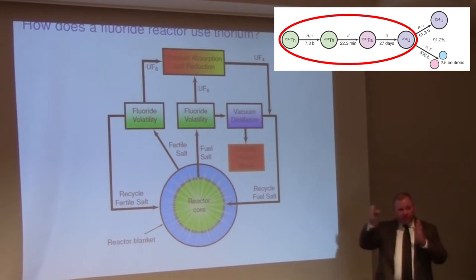As it takes those steps of decay, turning into other elements like protactinium and then uranium, we can employ a chemical separation to remove those new materials from the blanket.